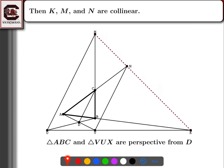The argument is just to observe that these two triangles are perspective from D, which means K, M, and N are collinear by Desargues' theorem. That finishes this problem and this lecture.